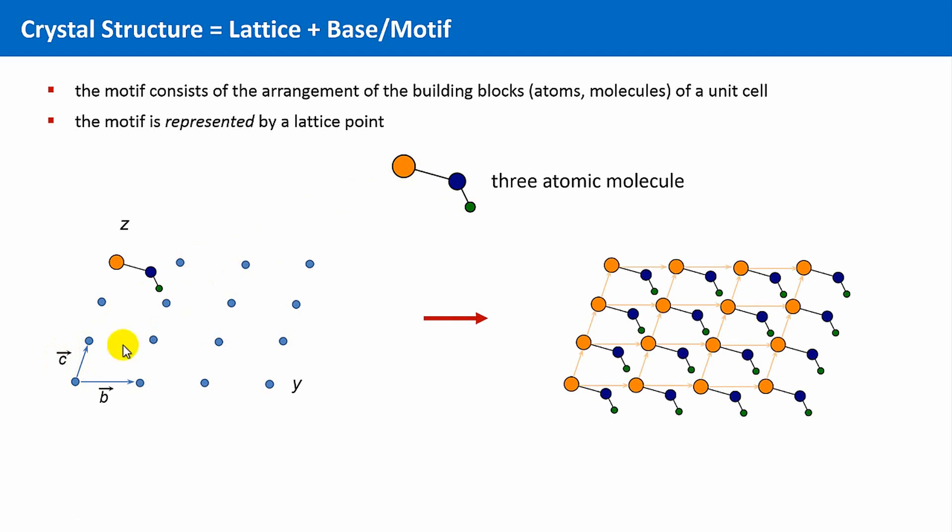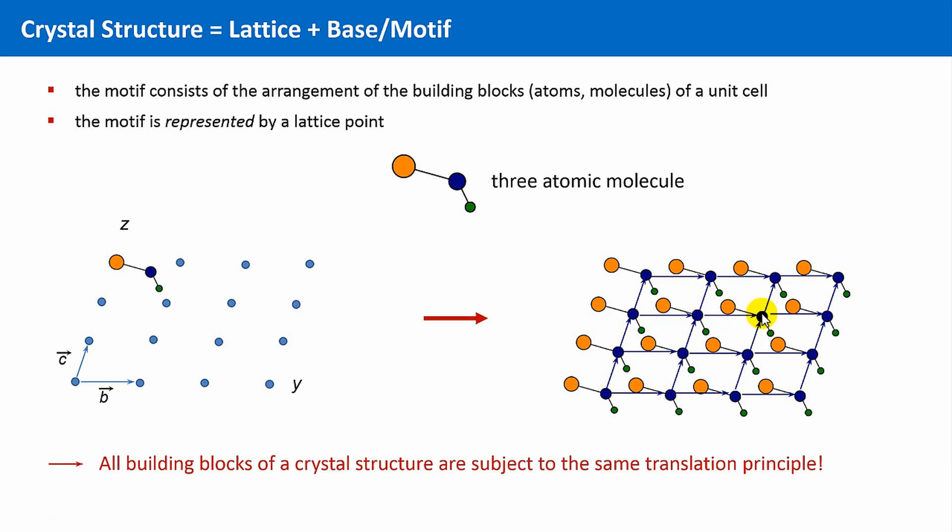We see that the orange atoms are translated by this orange lattice. And this must be also the case for the blue atoms. All building blocks of a crystal structure are subject to the same translational principle. Therefore, also the green atoms build the same lattice, or are transferred to each other by the same lattice.